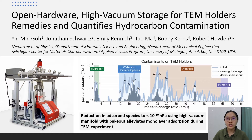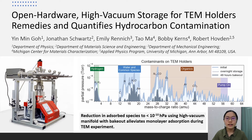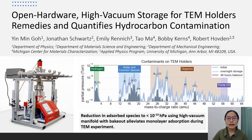Here on the right is a residual gas mass spectrum of a TEM holder commonly stored in a desiccated cabinet. We have carried out similar measurements on several other holders, and they all show that TEM holders are inherently dirty and introduce a range of unwanted species into vacuum. So, we have come up with a high vacuum storage solution that also includes a bake-out system. In this talk, I will show you how this manifold can offer up to four orders of magnitude reduction in absorbed species on a TEM holder, and helps to elevate monolayer absorption during TEM experiments.